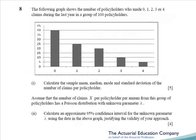Moving on to question eight, we go back to simplicity itself. We're given a bar chart and we're asked to calculate the sample mean, median, mode and standard deviation — another five marks for doing school stuff. Moving on to part two, we're asked to calculate a 95% confidence interval for lambda from a Poisson lambda. This is fairly standard stuff and should have presented no problems.